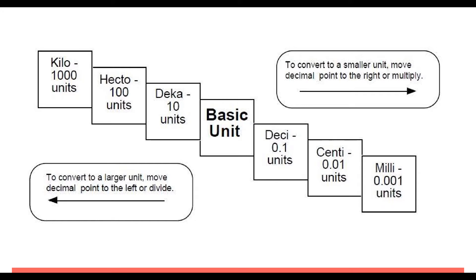The basic unit is whatever the non-prefixed unit is for that type of measurement — for example, a meter, a liter, or a gram. One easy way to tell: if a unit doesn't have a prefix, it's the basic unit. If it has a prefix, it will find a place in one of the squares on the staircase.